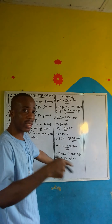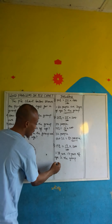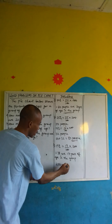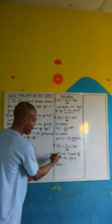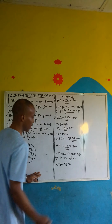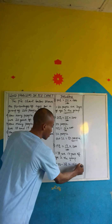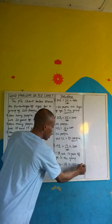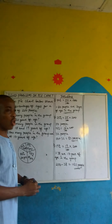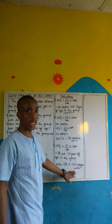How many people in the group are not 17 years? We take the total of 200 people in the group minus the 38 who are 17 years old. Subtracting gives us 162 people. So 162 people are not 17 years of age in the group.